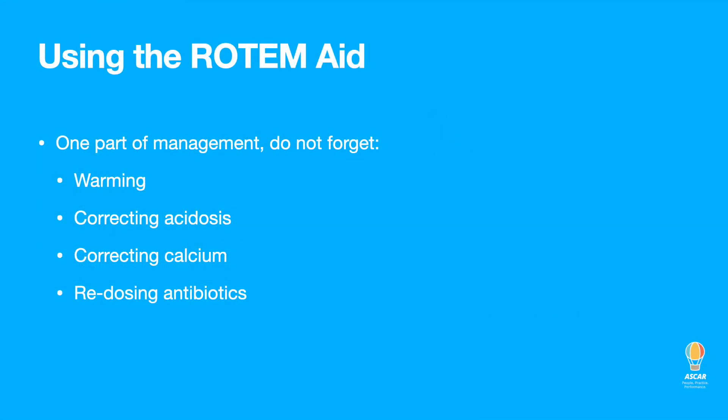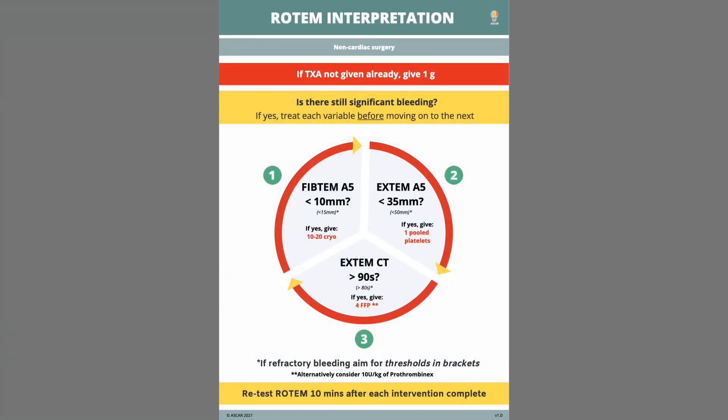Rotom is one part of the management of the bleeding patient. Remember the other pillars of anaesthetic management: warming the patient, ventilating the acidosis, correcting the calcium, and redosing antibiotics. And lastly, if they are still bleeding, ask yourself — is additional expertise needed? Could this be surgical bleeding? Discuss and give thought to the appropriateness of adjuncts like Factor 7. It is extreme, but this may be that extreme case.